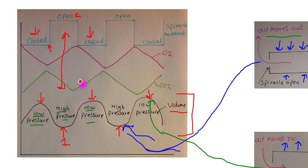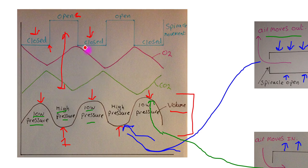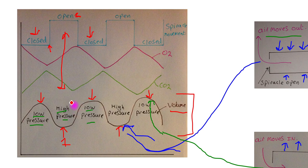We're going to look at a question that tests knowledge of ventilation movements. The question introduces the fact that there are two sets of spiracles in an insect — one set on the thoracic region and another set on the abdomen. This expands the knowledge beyond the graph we've just looked at, and will give us a better understanding of how air circulates through the tracheal system.